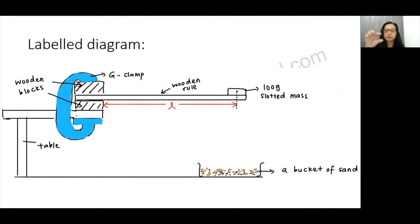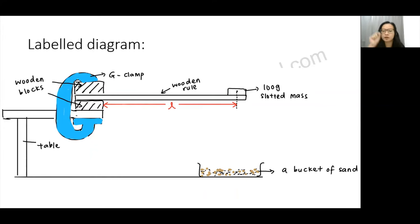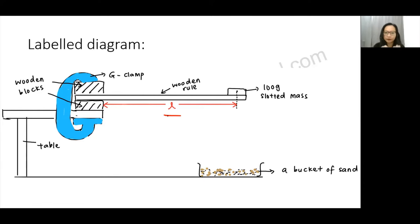I use two wooden blocks to protect the wooden ruler from being deformed — applying force directly could deform it and affect the Young's modulus measurement. I also have a bucket of sand in the diagram. If I draw that, it counts as a safety precaution even if I don't write it separately, because the examiner sees it in the labelled diagram. That shows how important the labelled diagram is. I also have a 100-gram slotted mass, and L represents the length of the wooden ruler measured from the clamp end to the centre of the slotted mass.